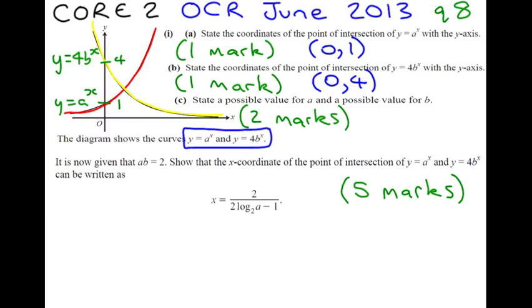State a possible value of a and a possible value of b. Now we need to think about what value does a have to be so that the line actually increases as we can see it does. Now if we think about a number, say 1, 1 to the power of x is always 1. So if we thought a was going to be 1, we'd actually get a straight line. If we thought a was going to be bigger than 1, let's say 2, we're going to get 2 to the power of 0 is 1.